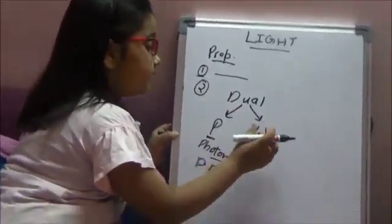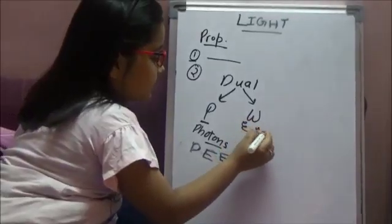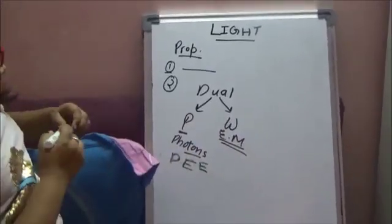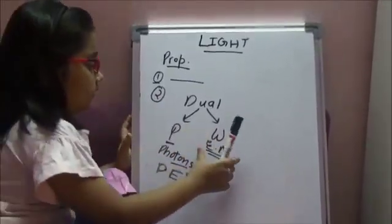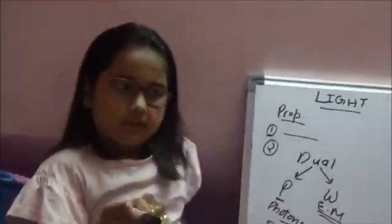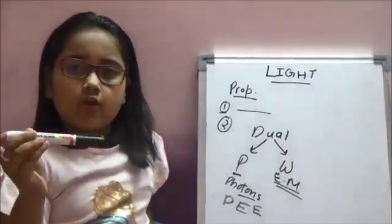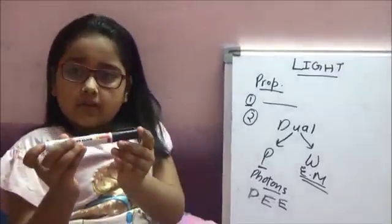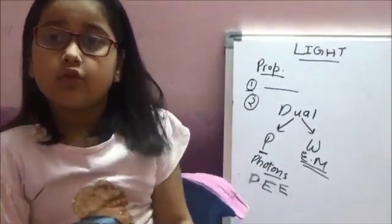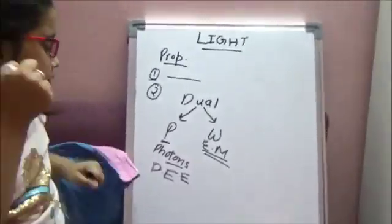Coming to the wave nature — wave nature means that light consists of electromagnetic waves. This was given by Sir Maxwell. Unlike sound waves, light waves do not require a medium to travel. For example, light waves travel a distance of one astronomical unit in 8 minutes 20 seconds from the sun to Earth, and there is no medium in between.